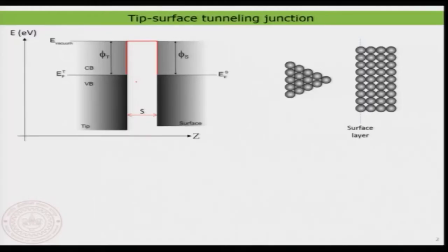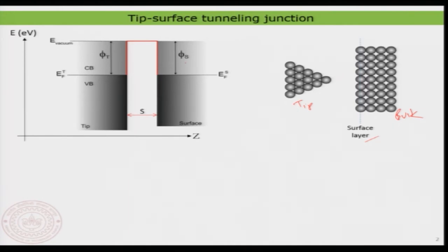You have already seen the tip-sample tunneling junction. We have our surface layer, the bulk of the material, and our tip. In the previous class we discussed that when the tip and the surface are brought closer they form the so-called tunneling barrier. The most important characteristic to recollect is the work function and the alignment of the Fermi level — when no bias is applied, the Fermi level of both the surface and the sample is aligned.